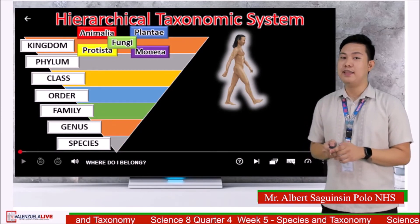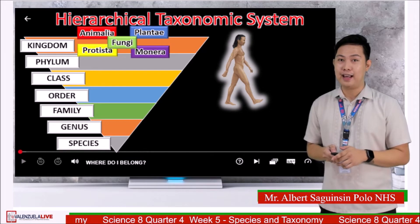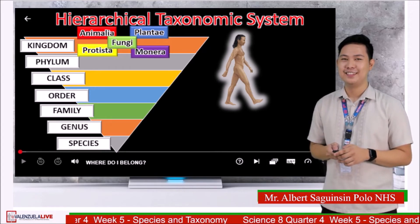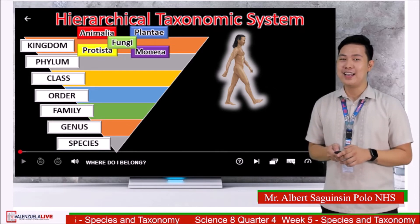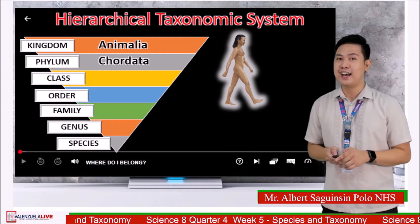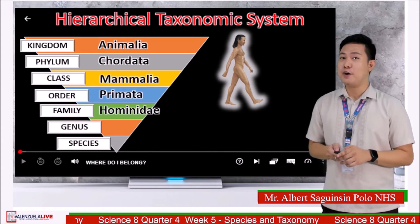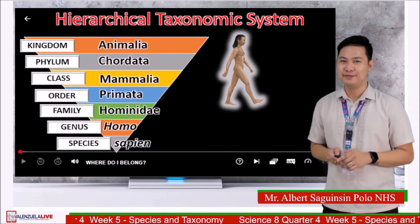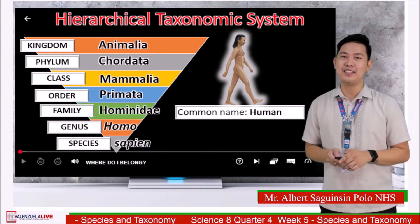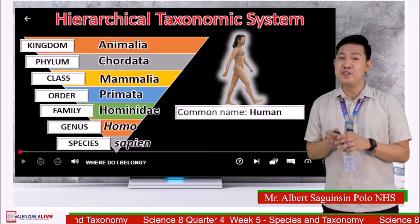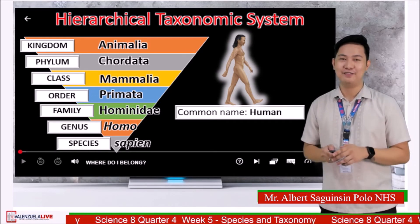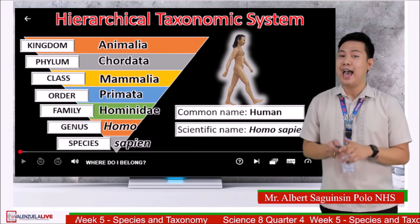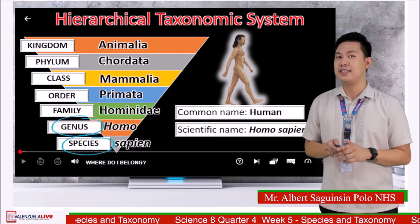Another one. In which kingdom does this organism belong — Animalia, Plantae, Protista, Monera, or Fungi? Awesome — this organism belongs to kingdom Animalia, phylum Chordata, class Mammalia, order Primates, family Hominidae, genus Homo, and species sapiens. What is the common name? Correct — it is human. Can you guess the scientific name of human? Amazing — the scientific name of human is Homo sapiens. Again, scientific names come from the genus and species taxonomy levels.